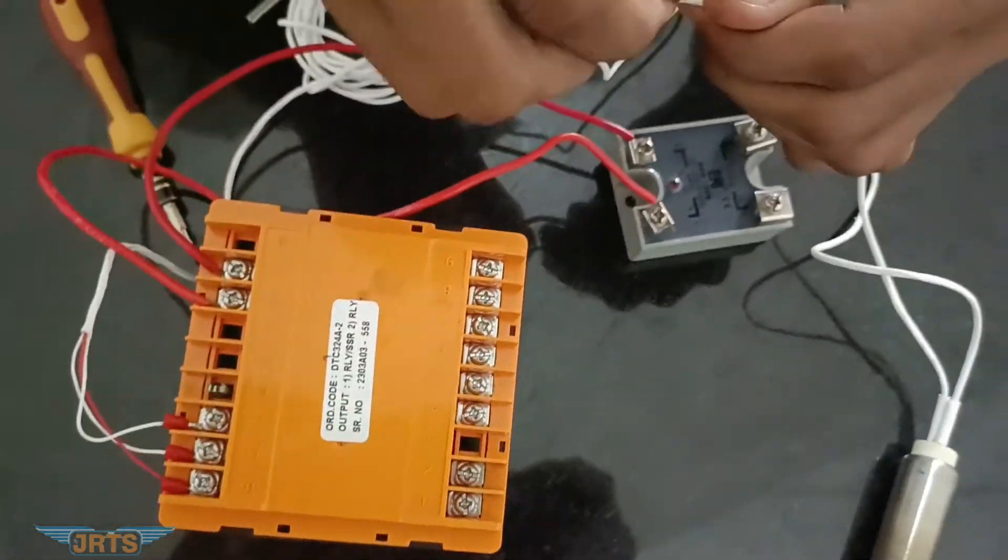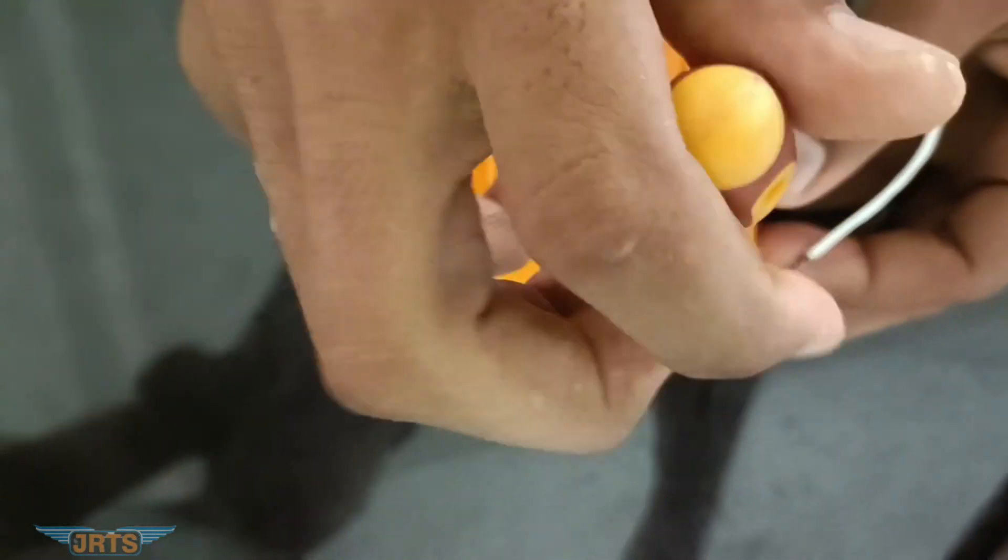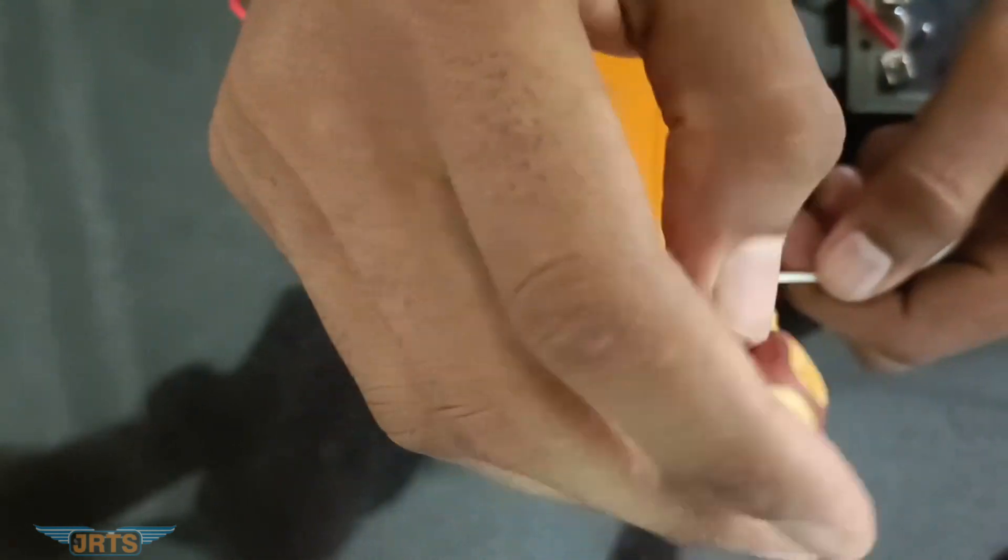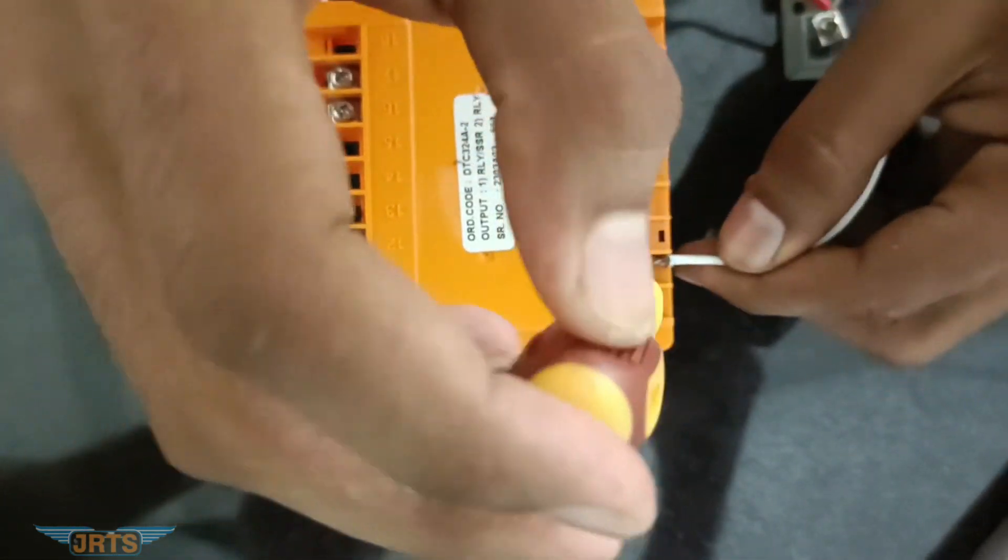On the other end of the heater we are going to connect to temperature controller pin number 2. That is neutral.